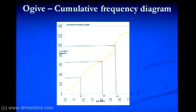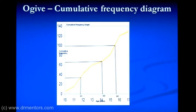The Ogive is used for identification of quartiles — first, second, and third quartile. The concept of quartiles has already been covered in detail. So the Ogive is used for the cumulative frequency diagram, and if this graph is shown in the exam you should be able to identify it.